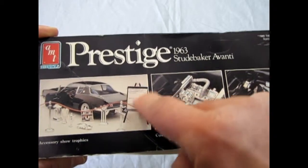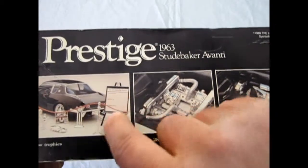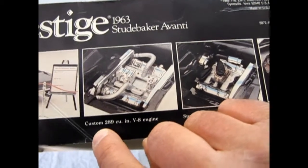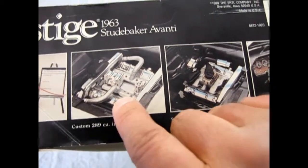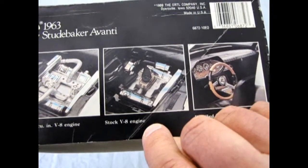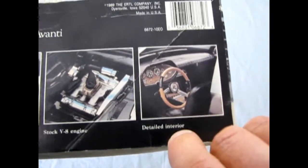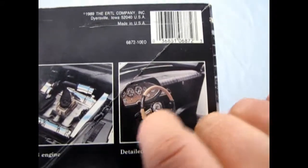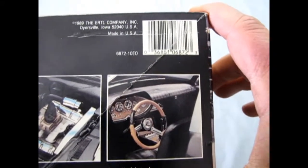So the accessories show trophies you get, plus this board with a decal that actually tells you about the car. Custom 289 cubic inch V8 engine - that's got the dual Paxton superchargers - and the stock version. And of course, your detailed interior. And look at that paint job that that model builder did. That looks really nice.